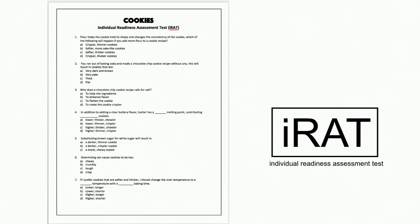Now you're going to move on to the group readiness assessment test - the GRAT. This is the one with the scratch-off stickers, and these are really easy to make. You just print it off and apply the scratch-off stickers to the paper. Groups are positioned around the room, and ideally each group has between three and six learners. I personally like three to four.